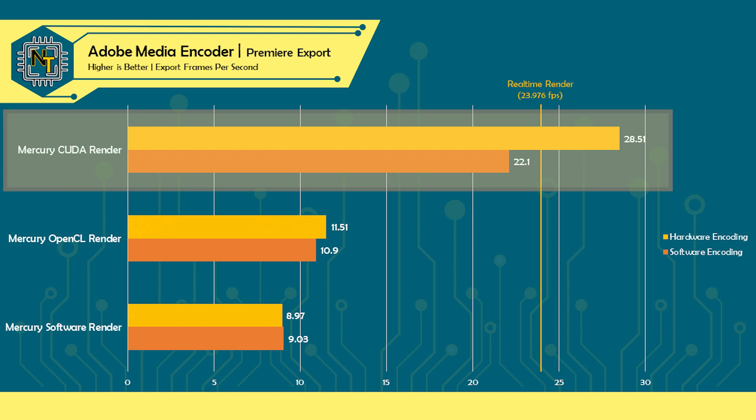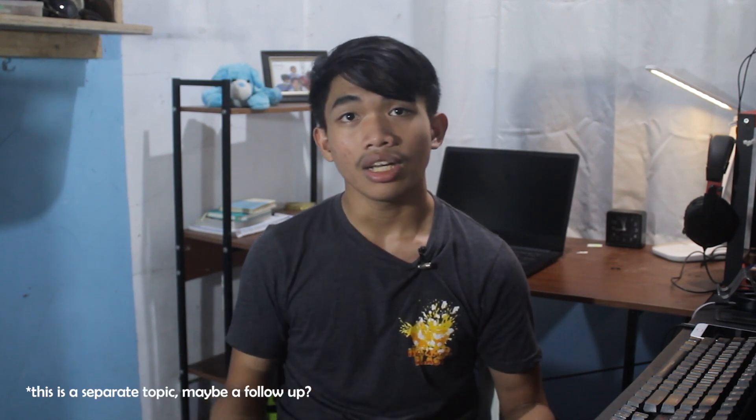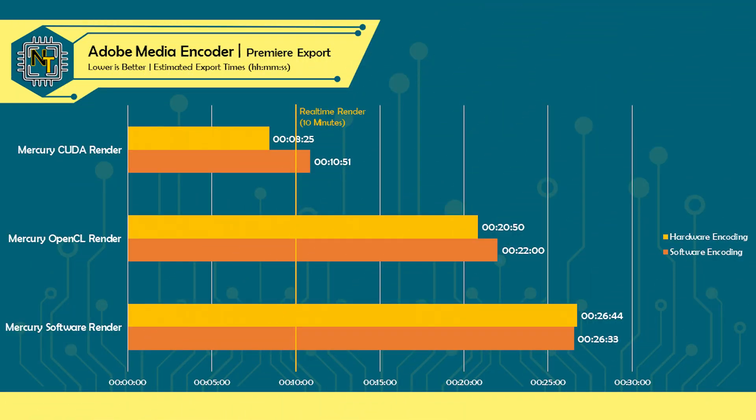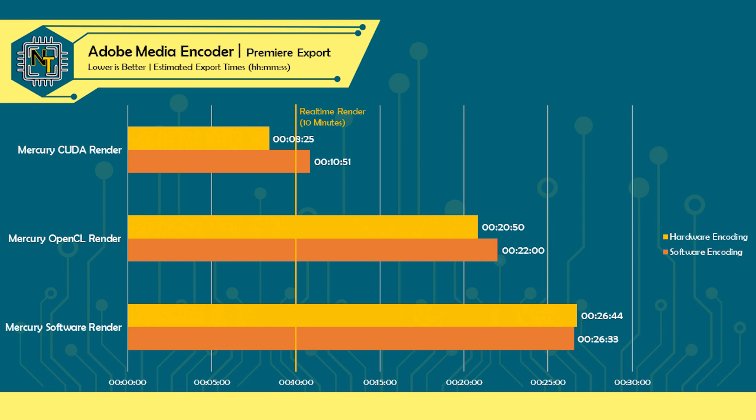With QuickSync enabled to handle encoding alongside the GT 1030 rendering, that pulls up to 28.51 FPS — way above the native 23.976 FPS frame rate of the project, meaning it can export the video faster than real-time. To put it in perspective with simple extrapolation: for a 10-minute project of the same complexity, CUDA with QuickSync encoding runs at less than half the time of even OpenCL with QuickSync, and makes software rendering feel like it takes forever. Sure, it may only be a dozen or so minutes, but that adds up across multiple exports if you're a professional editor — you will be saving a lot of time if you turn on CUDA.